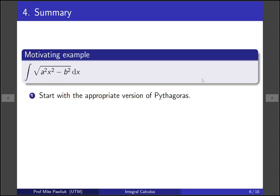So the problem is, start with the appropriate version of Pythagoras. So in our case it was 1 plus tan squared equals secant squared.